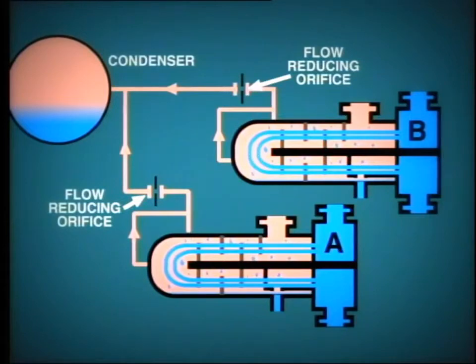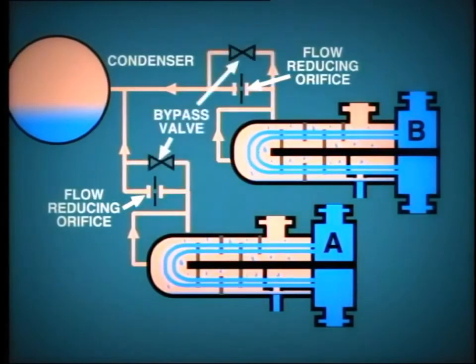However, during startup, the difference in pressure between the heater shell and the condenser is not very great. Therefore, in order to make sure that the heater is well vented, a bypass valve is fitted around this orifice. This valve should be opened during startup and closed when the unit is placed online at minimum load. In the example shown here, both low-pressure heaters are vented to the condenser.